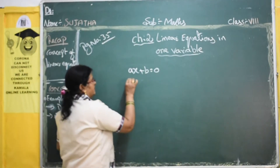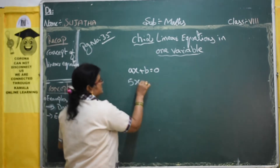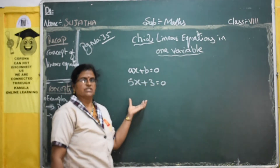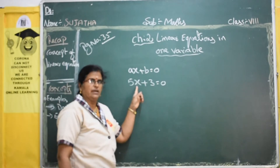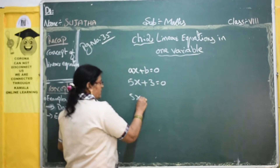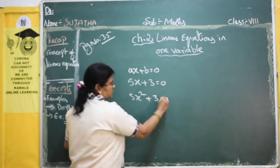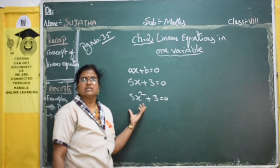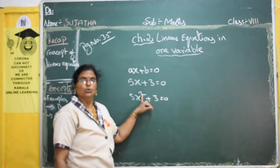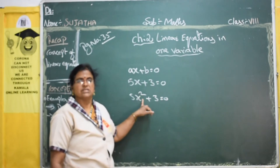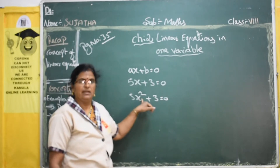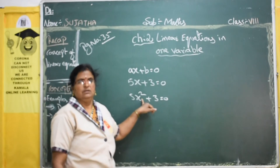For example, 5x plus 3 equals 0 is a linear equation because there is only one variable and the power is 1. If we take 5x squared plus 3 equals 0, that is not a linear equation because the power is 2 — that is called a quadratic equation. If the power is 3, it is called a cubic equation.